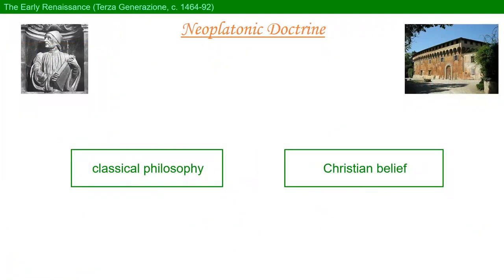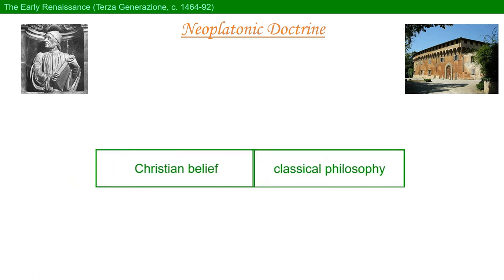Ficino's Neoplatonic doctrine had a wide cultural influence, far beyond the confines of the Academy in Florence. It was able to achieve this because with Ficino, classical philosophy and Christianity became entirely compatible. Because of this widespread acceptance, we should dive a little deeper into Platonism to fully appreciate Botticelli's upcoming works, among others.